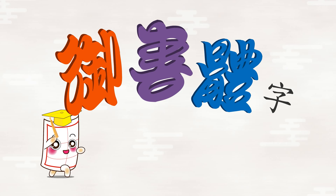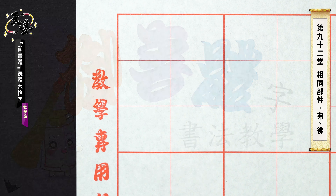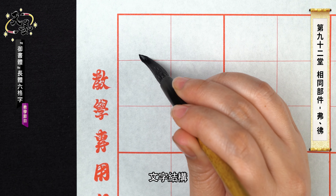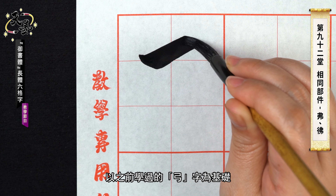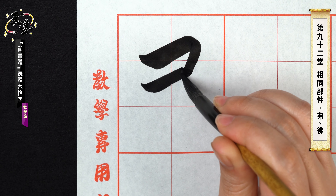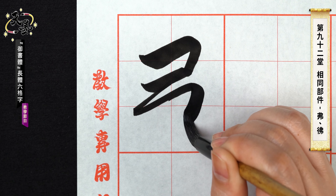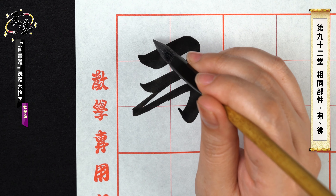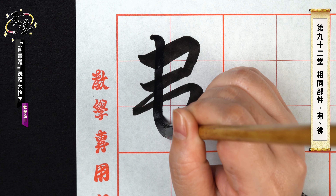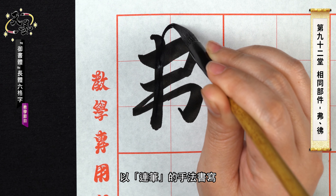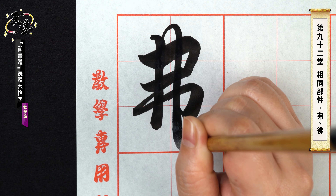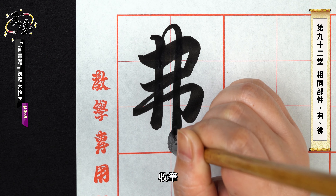Yushuti calligraphy tutorial. This character is fu. The basic structure is gong — we have learned it before. Tear it up. Join strokes. Next. Ending.